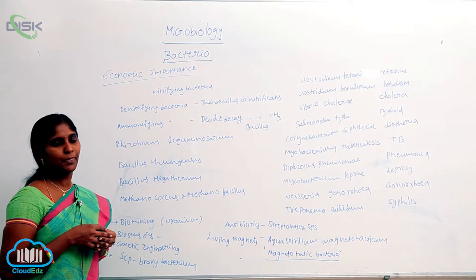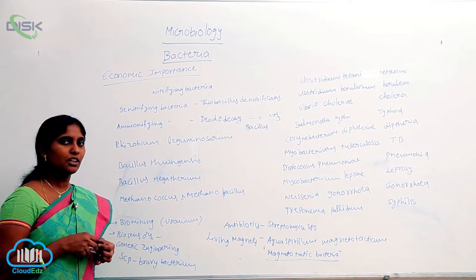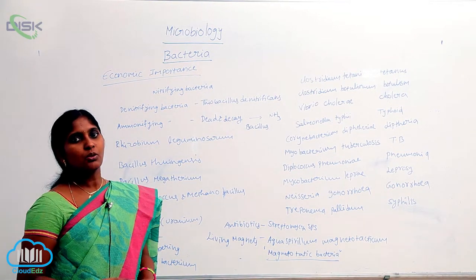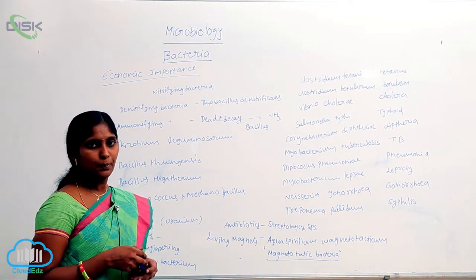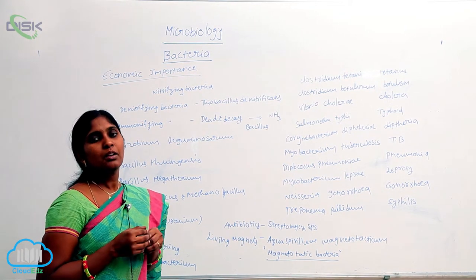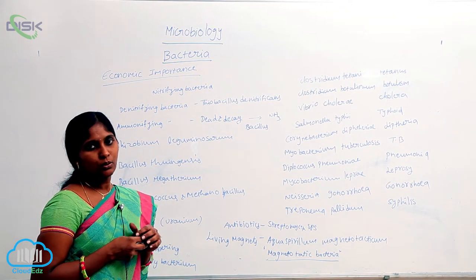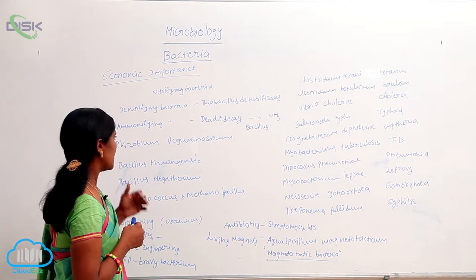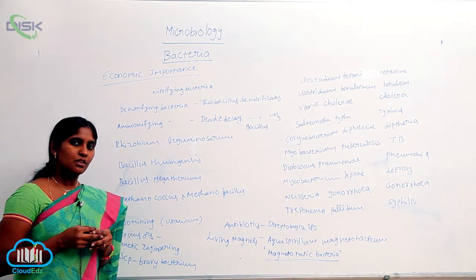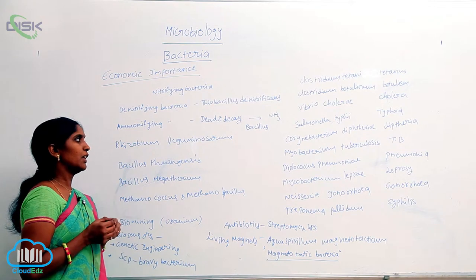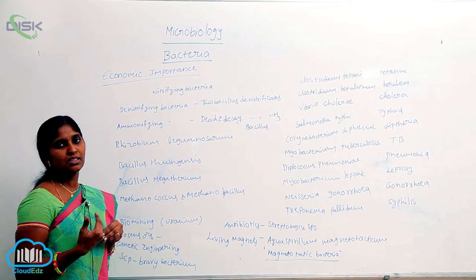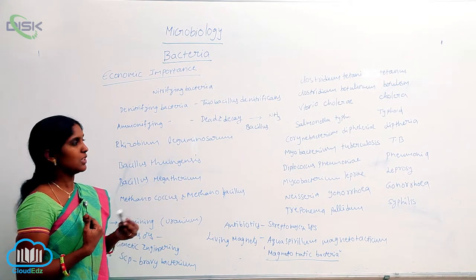Rhizobium leguminosarum is a nitrifying bacteria found in the root nodules of leguminous plants. It shows a symbiotic relationship with pea plants or leguminous plants. Rhizobium provides available nitrogen to the plant, while the leguminous plant in turn provides minerals and water to the bacteria.